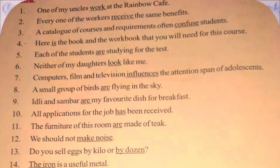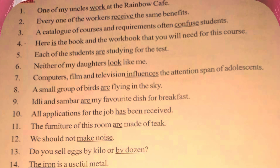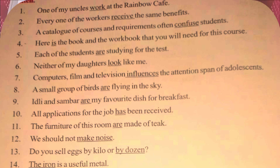Seventh sentence: 'Computers and television influences the attention span of children.' Observe this verb — 'influences' is in singular number, simple present tense. But the subject 'computers and television' is in plural number. So if this should be in correct conjugation with the subject, the verb should be replaced with 'influence,' not 'influences' — the last letter S should be deleted. 'Computers and television influence the attention span of children,' because the subject is in plural number.